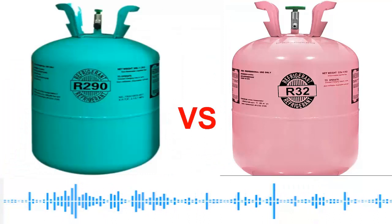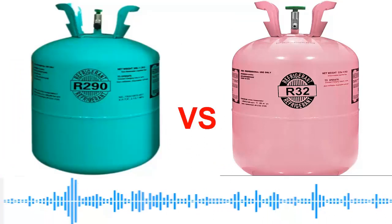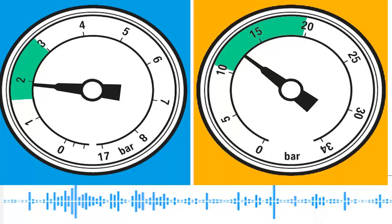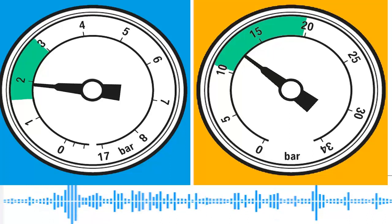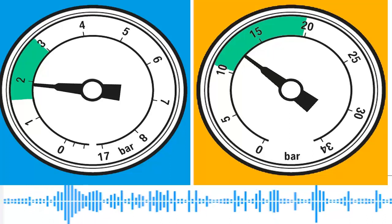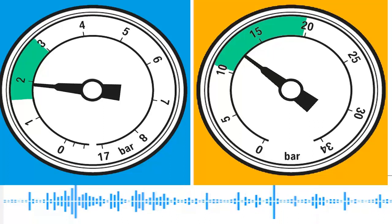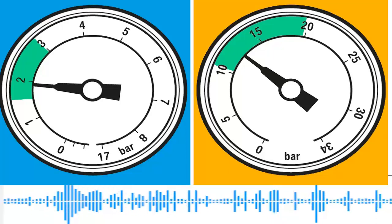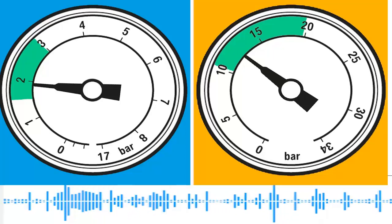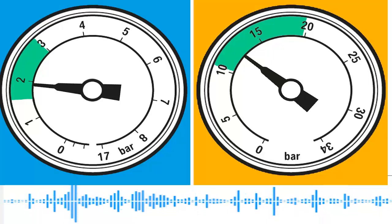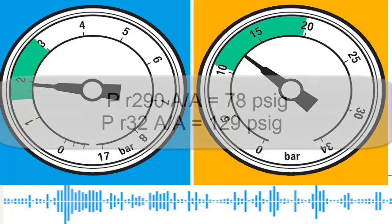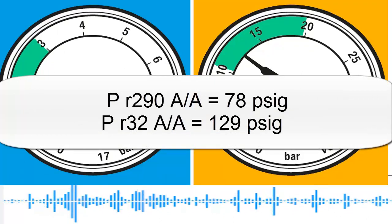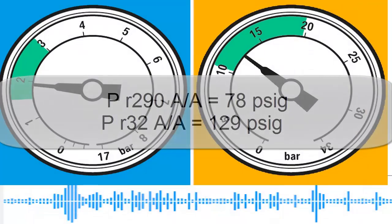The R290 refrigerant has very different pressures than the R32. The pressures of the R290 are much lower, even similar to those of the R22. So we can say that the R32 has pressures similar to the R410A, and the R290 has pressures similar to the R22. The pressure of the R290 is about 78 PSI while that of the R32 is about 129 PSI.